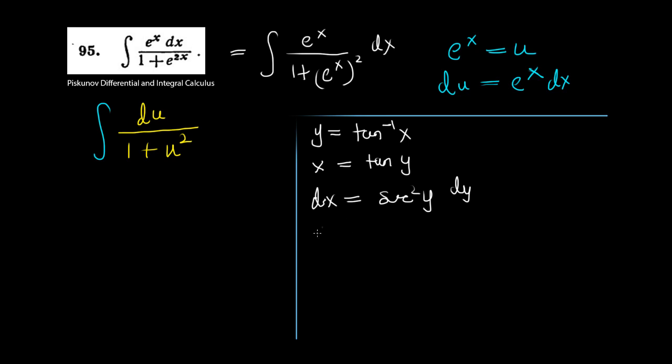If we solve for dy/dx, we get dy/dx equals 1 over sec^2(y), which is the same as 1 over (1 + tan^2(y)) by the basic trigonometric identity. Since tan(y) equals x, this becomes 1 over (1 + x^2).